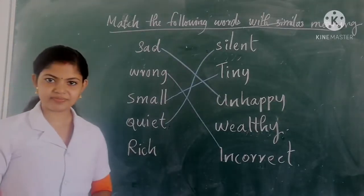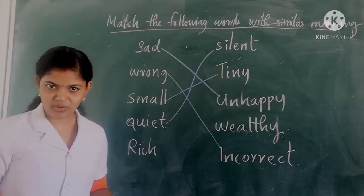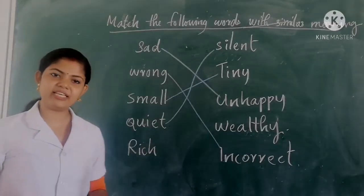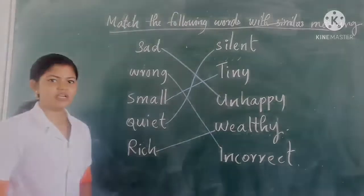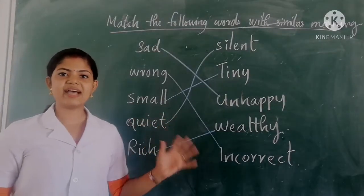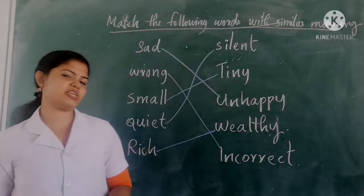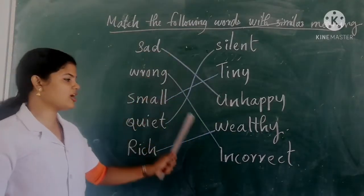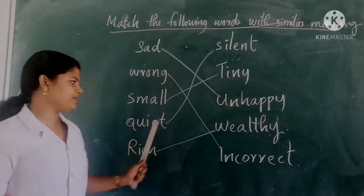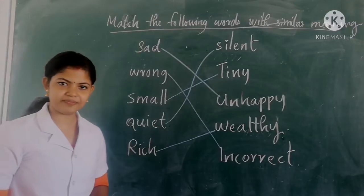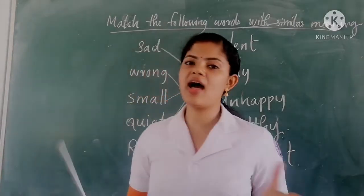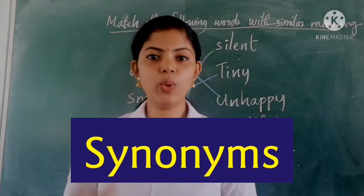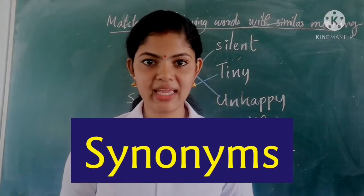Next word is rich. Rich means someone who has a lot of money. Is there any word related to rich? Yes, wealthy. Wealthy also means rich, so we can connect them together. So here you can see some words which have similar meaning but different spelling and different pronunciation: sad/unhappy, wrong/incorrect, small/tiny, quiet/silent, rich/wealthy. These are known as synonyms. Synonyms means words which have similar meaning.